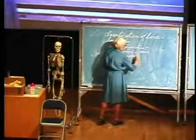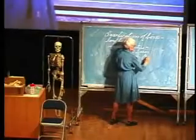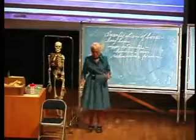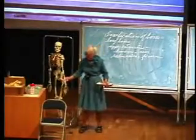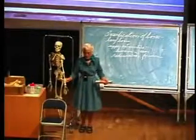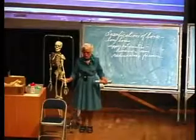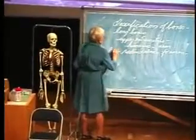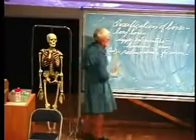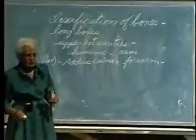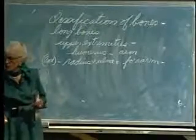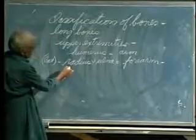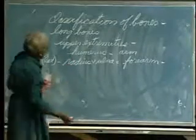The radius and ulna form the forearm. Which is medial and which is lateral? The radius is lateral - that's important to know. How many have broken a radius? Then we come on down to the palm - these are long bones. We have the metacarpals, which are the bones in the palm of your hand in anatomical position.